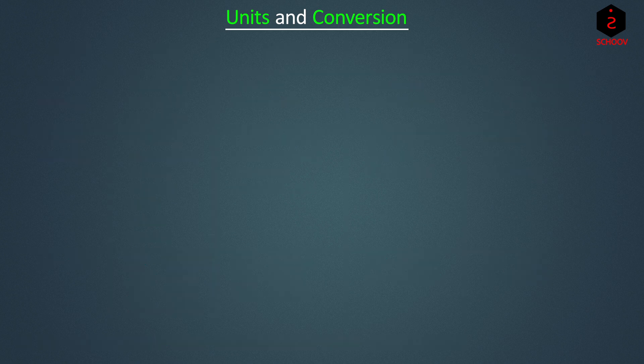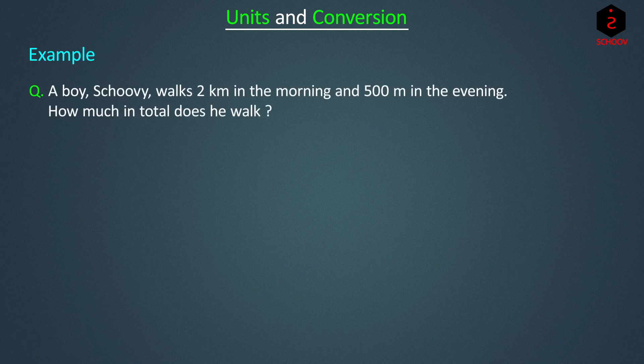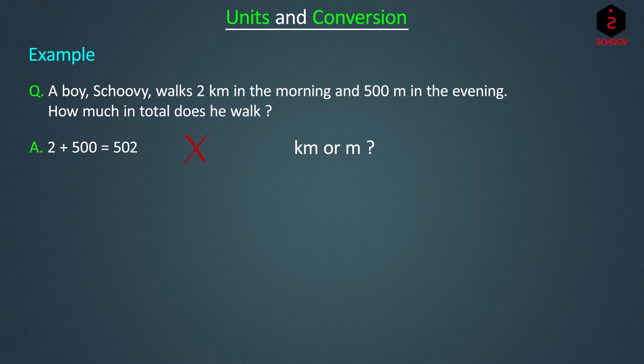Let's take a simple example to understand how we use units. A bald Scooby walks 2 km in the morning and 500 metres in the evening. How much in total does he walk? Since the units are different, we cannot simply say 2 plus 500 equals 502, because we would not know if it is 502 km or 502 m. What do we do now?